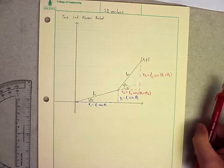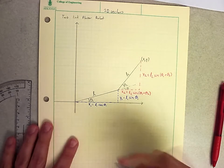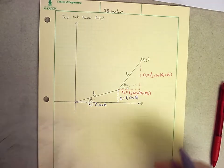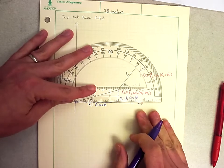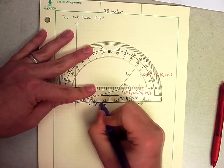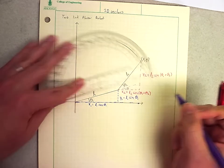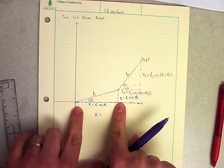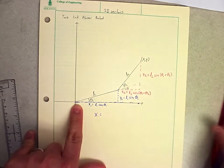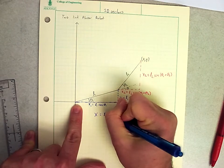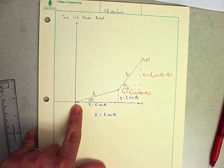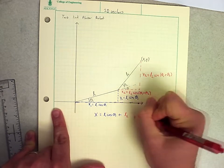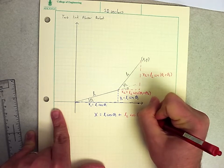So my entire distance from here to here, x is going to equal the distance from here to here, which is L1 cosine theta1 plus L2 cosine of (theta1 plus theta2).